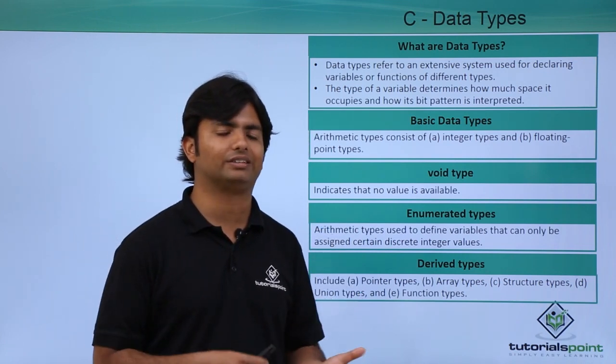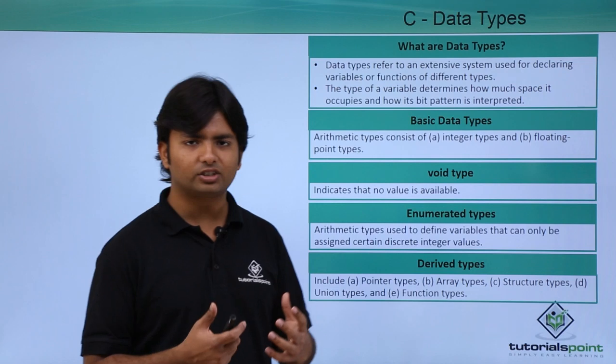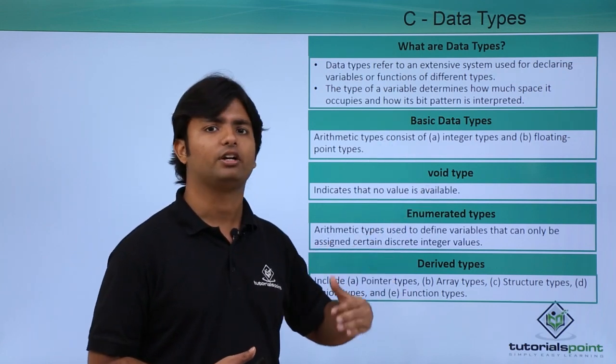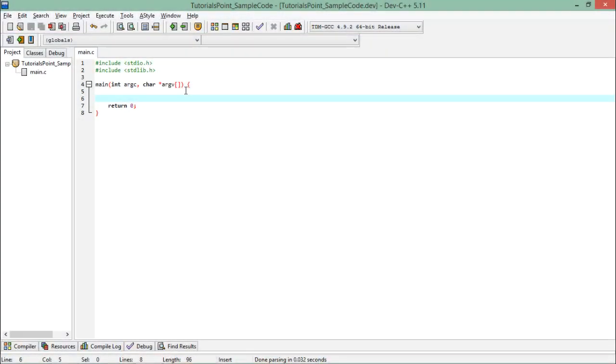Let's quickly see practically how we can define variables of various data types. Inside this main method, if I want to define any variable of a specific data type, I can simply use the name of the data type. For example, here I have used 'int', and after that I can give the name of the identifier through which I can use it further in this program. For example, if I want to define a variable of integer type with the name 'var', I use 'int var' and terminate it with a semicolon.